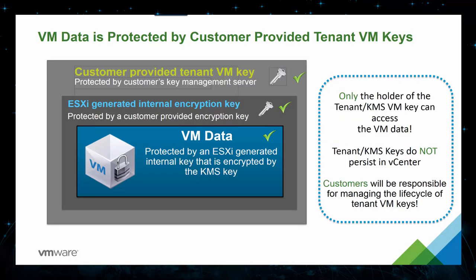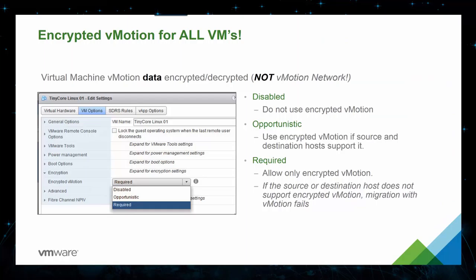This slide shows an overview of how the VM is encrypted. It reinforces the fact that the key from the tenant-provided KMS is managed by the KMS and the KMS admin, and that these keys do not persist in the vCenter server. The customer is responsible for managing the lifecycle of tenant keys. Another new security feature enables you to encrypt all your VMs while vMotioning them. There are three options for encrypted vMotion as a default behavior: disabled, where no VMs will be encrypted during vMotion; opportunistic, which uses encryption if the source and destination host support it; and required, which will only allow encrypted traffic — if either host does not support encrypted vMotion, the migration fails.